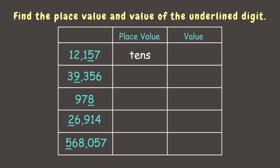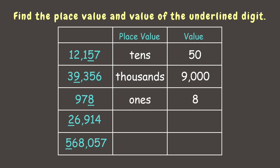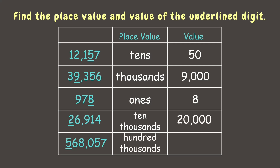Next, the underlined digit is nine, which is in the thousands place, which means the value is nine thousand. Next, the digit eight is in the ones place, so the value is eight. Next, we have two in the ten-thousands place, which means the value is twenty thousand. And lastly, the digit five is in the hundred-thousands place, which gives us the value five hundred thousand.